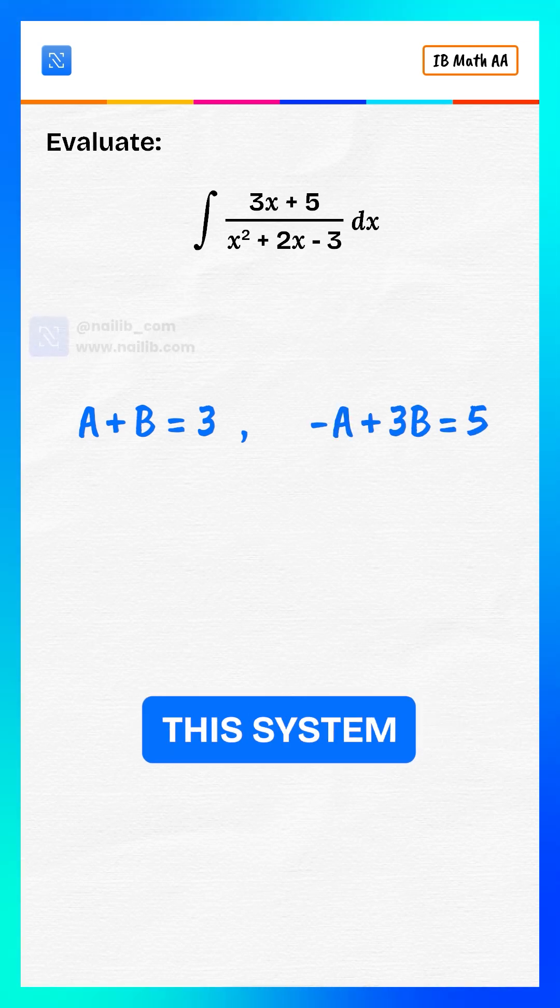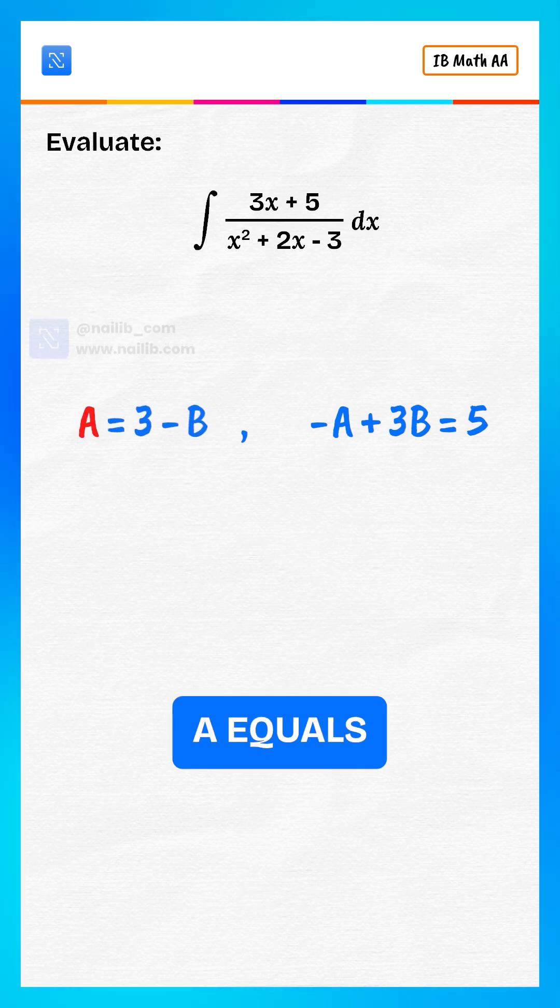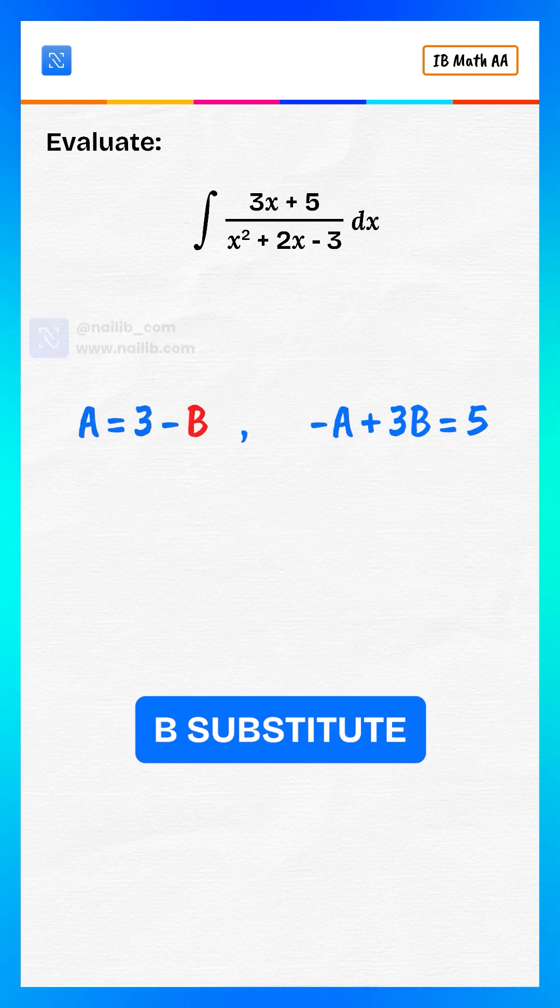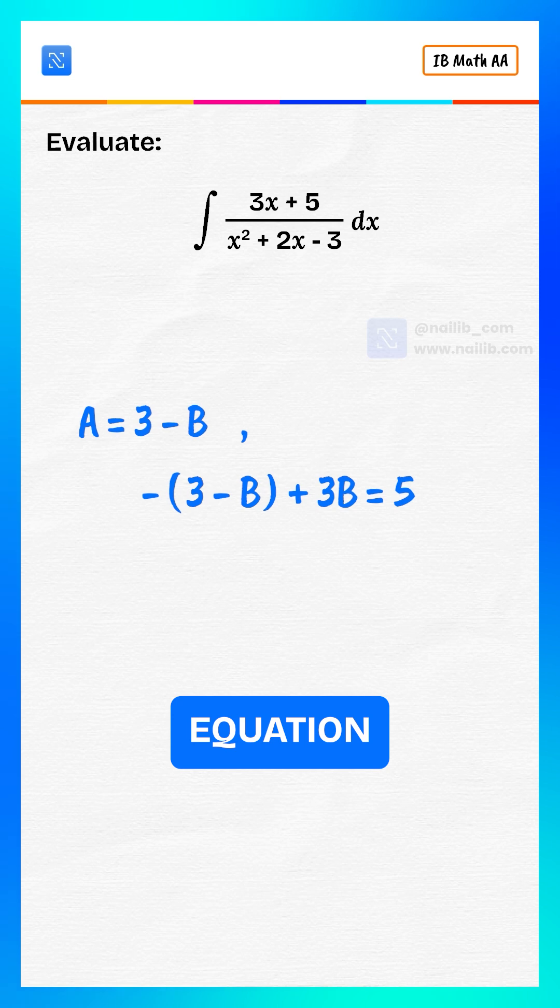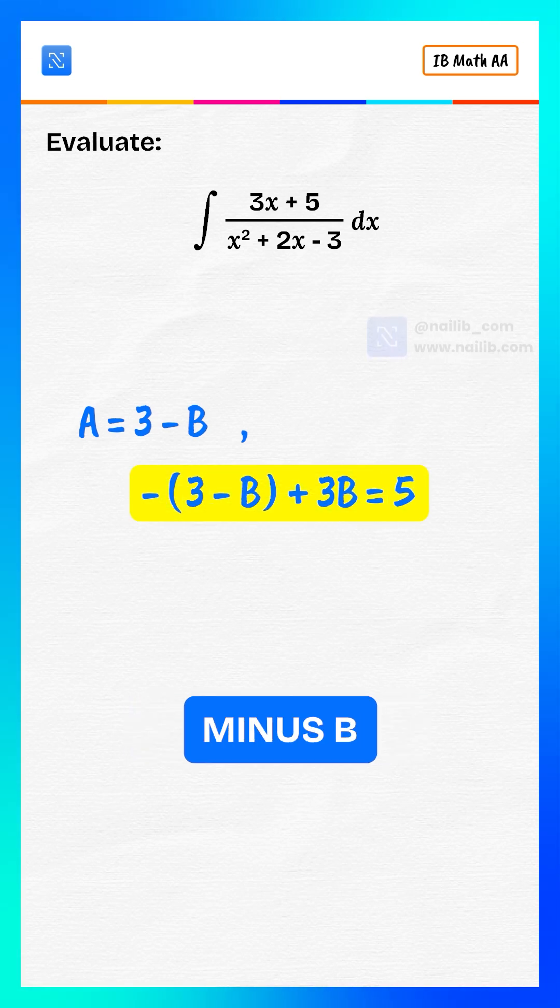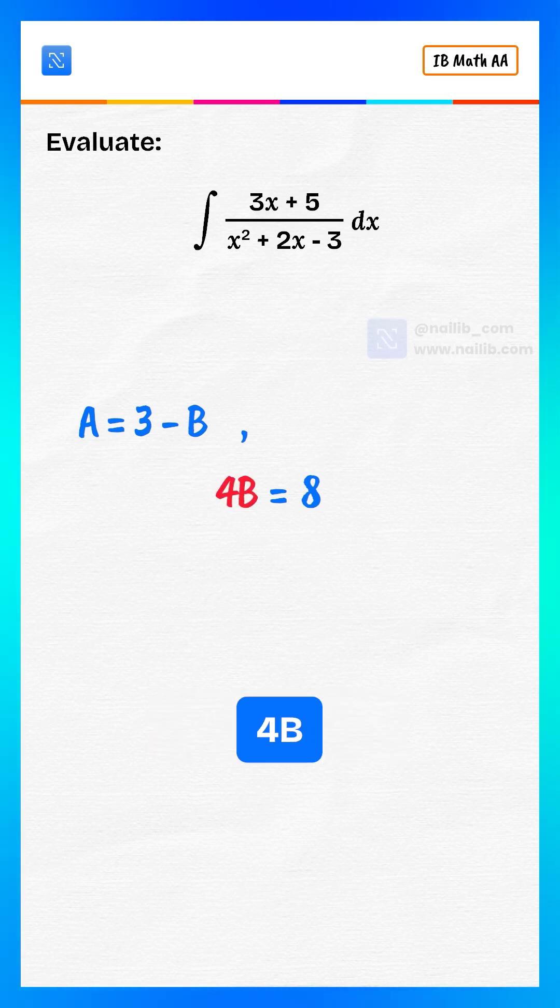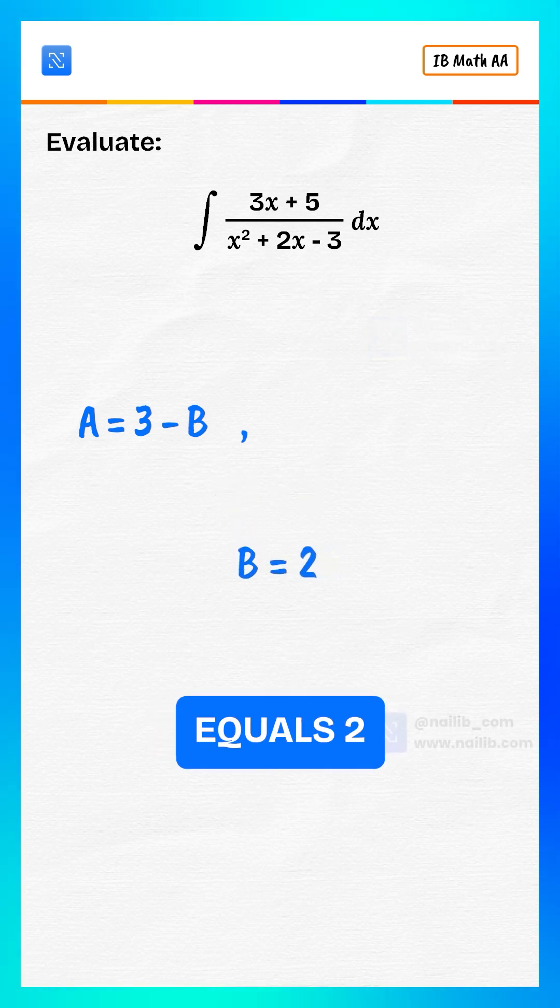Solving this system. From the first equation, a equals 3 minus b. Substitute into the second equation. Negative of 3 minus b plus 3b equals 5. That gives 4b equals 8, giving b equals 2.